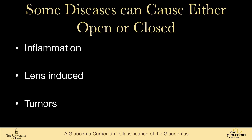There are some families of diseases that can cause either open or closed angle glaucoma. Inflammation can cause angle closure from synechiae, but it can also cause open angle glaucoma from trabeculitis or scleritis. Lens-induced glaucoma can be phacomorphic — which is pupillary block angle closure — or something like phacolytic, which is open angle. Tumors can cause both open and closed angle forms of glaucoma.